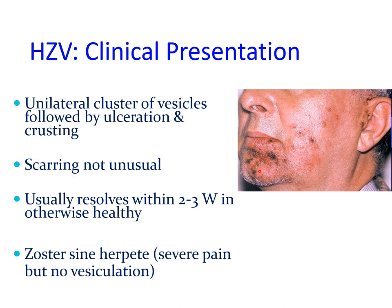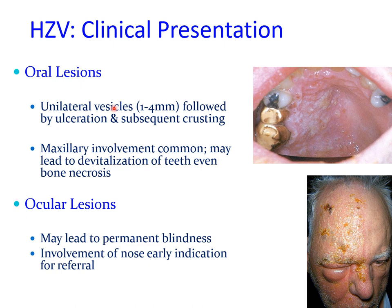Sometimes the classical vesicles and crusted lesions may not develop but the patient still experiences severe pain — this is known as zoster sine herpete, where there are signs of shingles without the obvious clinical signs of vesiculation. Facial lesions of shingles are extremely painful and may be accompanied by intraoral lesions — usually unilateral vesicles which later ulcerate and tend to scar.